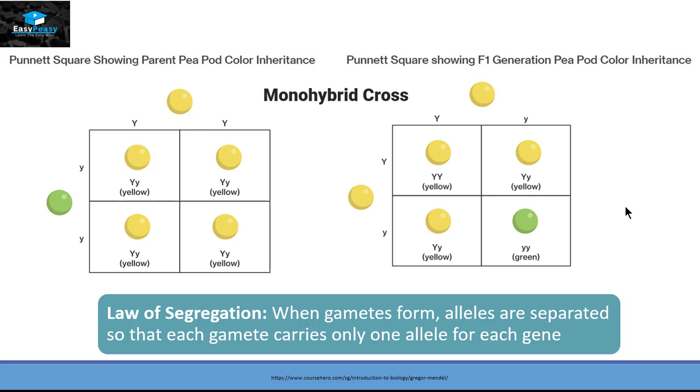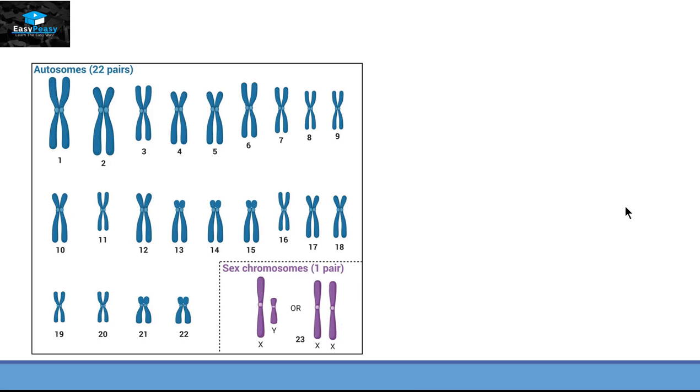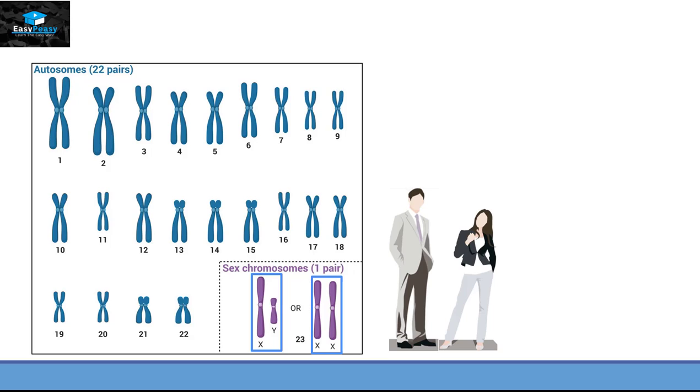Now let's apply all the information that we learned on a human being. Human beings have 23 pairs of chromosomes out of which 22 pairs of chromosomes are autosomes that are same in both male and female, and one chromosome is different in male and female. If it is X and Y then it is a male category, and if it is XX then this is a female category.